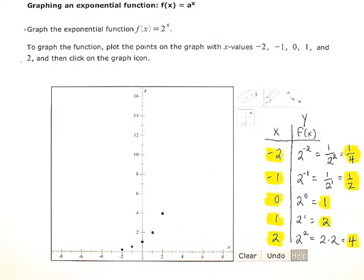So all my dots here are at these points: negative 2, positive 1 fourth; negative 1, positive half; 0, 1; 1, 2; and 2, 4.